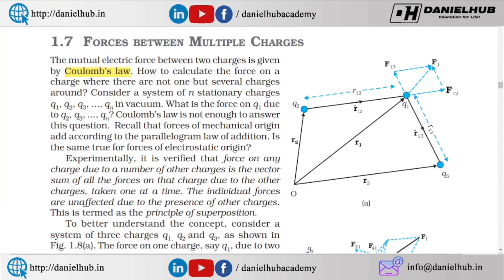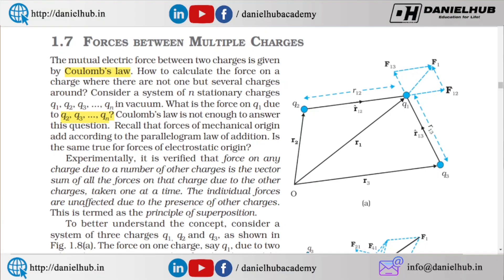So consider one charge, two charges — you have to calculate the net force on a given charge. Consider a system of n stationary charges Q1, Q2, Q3, Q4 in vacuum. There are n number of charges. What is the force on Q1 due to Q2, Q3, Q4, and others? Coulomb's law is the basic formula. Recall the forces of mechanical origin and, according to the parallelogram law of addition — is the same true for forces of electrostatic origin? Yes, the parallelogram law of addition is the suitable law here.